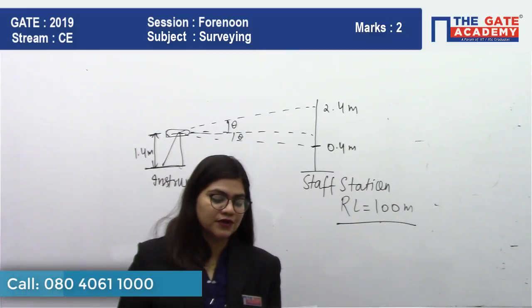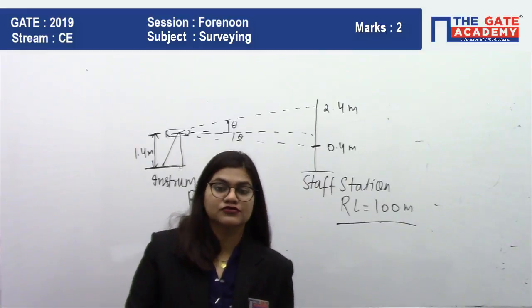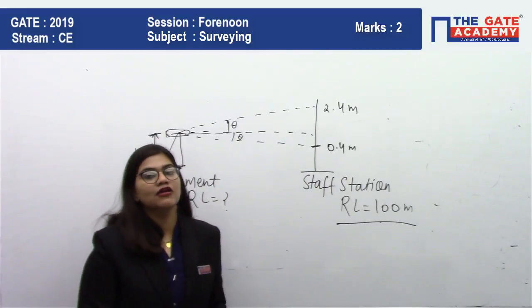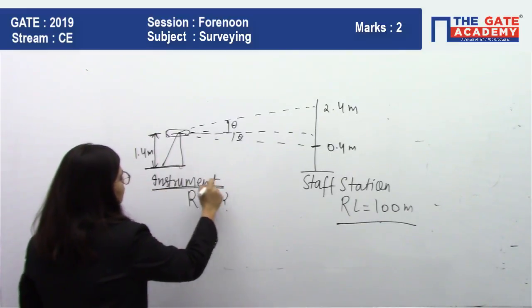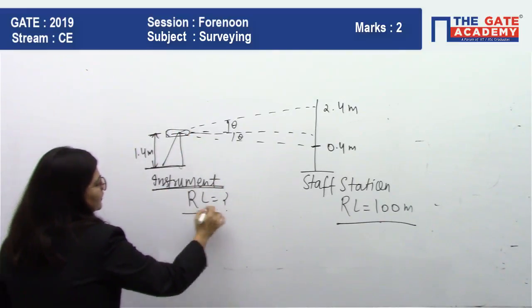If the height of instrument from the ground is 1.4 meters, what is the RL of the theodolite? You have to calculate the RL of the instrument where this instrument is placed.